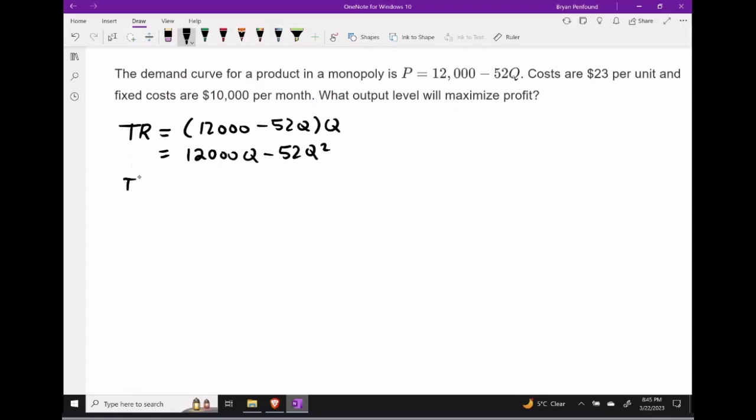Next we want to find the total cost function. This can be found by determining our variable costs plus our fixed costs. Our variable costs are $23 per unit, or 23Q, and our fixed costs are $10,000. Recall that maximal profit occurs when the marginal revenue equals the marginal cost.